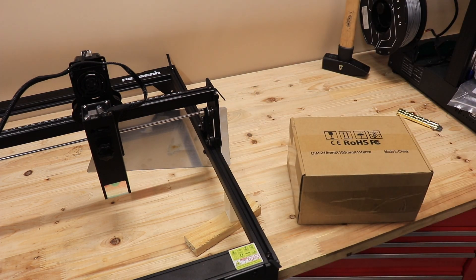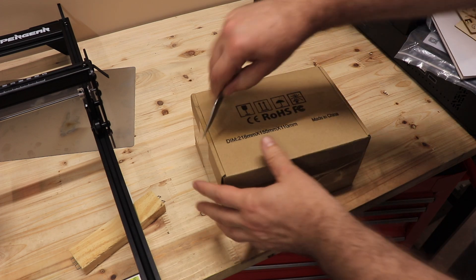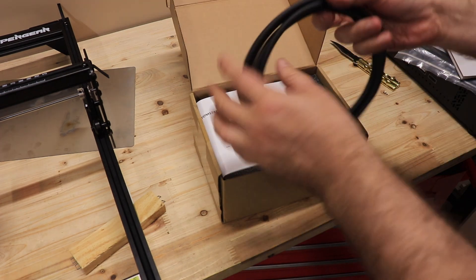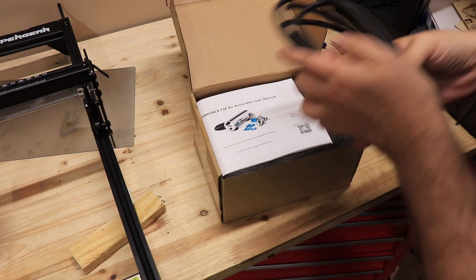So let's see what's in the box. Pipe, the length is approximately 2 meters, user manual, two screws.